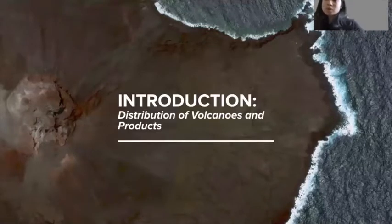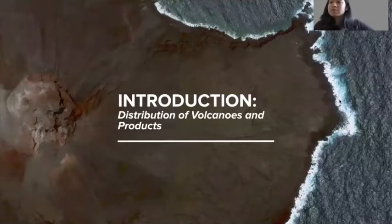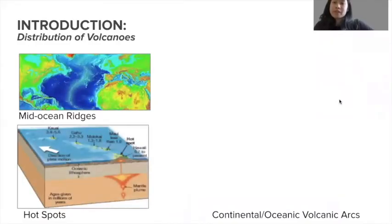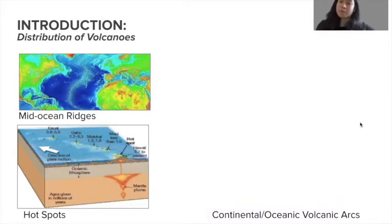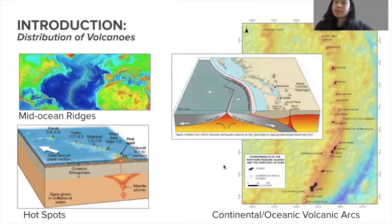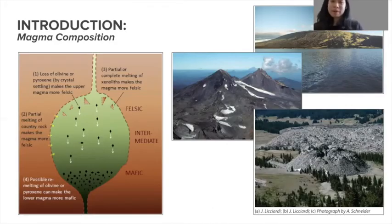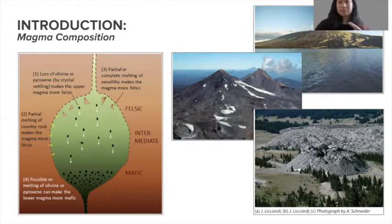To briefly introduce volcanoes, we'll look at how they're distributed around the world. You'll find volcanoes at divergent boundaries, for example mid-ocean ridges. You'll find them at random spots in the world where mantle plumes direct hot mantle up to the surface — these are called hot spots. And you'll also find them along convergent boundaries, along continental and volcanic arcs. It's important to think about where volcanoes are placed because that can tell you about the magma composition you can expect from those places.